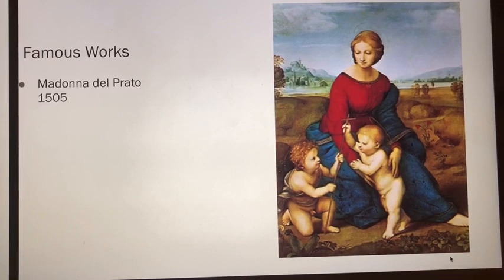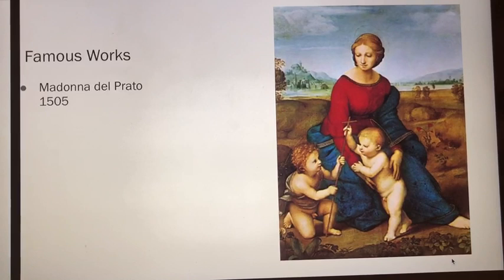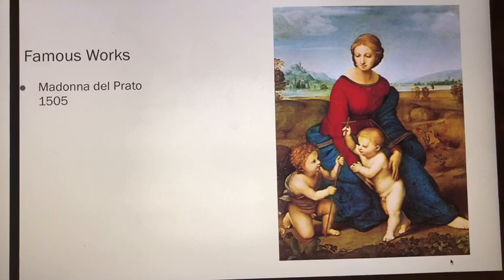This shows the rebirth of art and literature, symbolic of the Renaissance. Another form of symbolism is the cross that baby Jesus is holding, which symbolizes the beginning of Christianity. A technique used in this painting is shadowing, which helps make the characters' faces in the picture look more realistic.